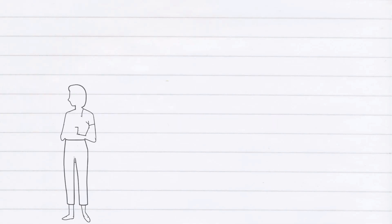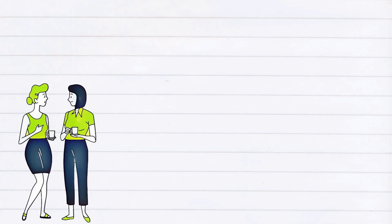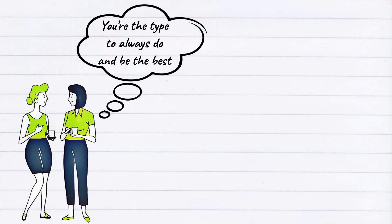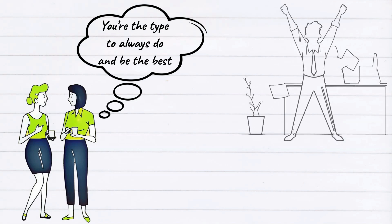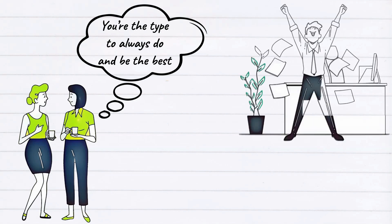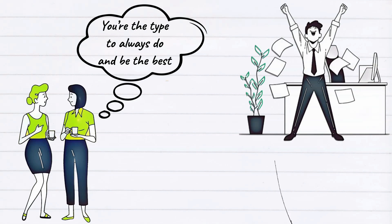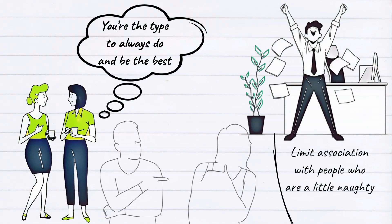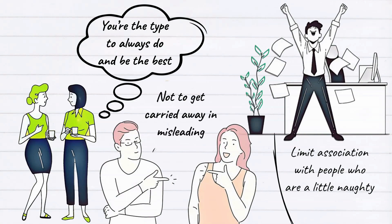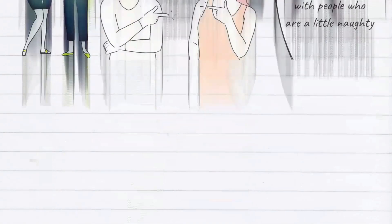Three: striving to be the best. Despite enjoying being alone, you're the type who knows when to stay in your comfort zone and when to step out of it. It's because you're the type to always do and be the best. You always do positive things and keep yourself away from negativity. This doesn't necessarily make introverted people limit association with people who are a little naughty. However, it makes you more selective when choosing friends so as not to get carried away in misleading associations.